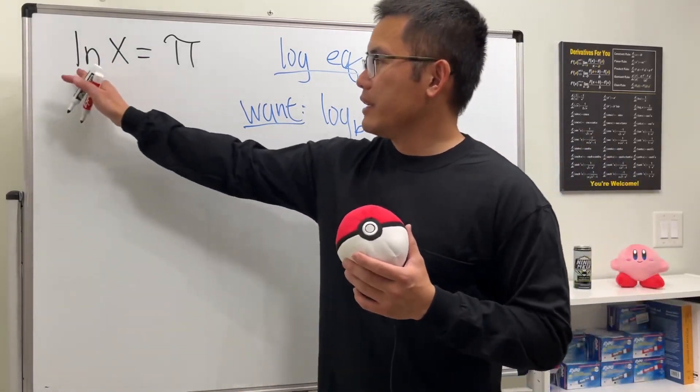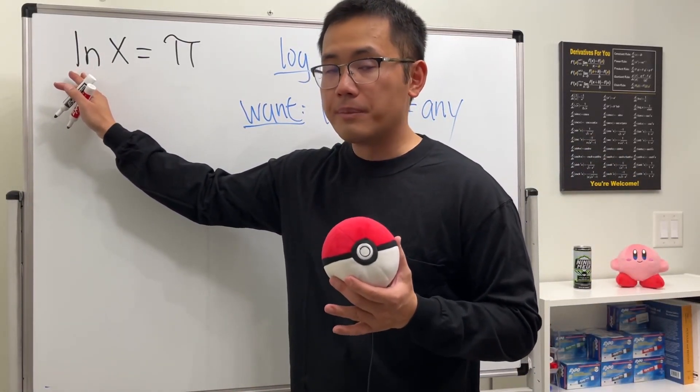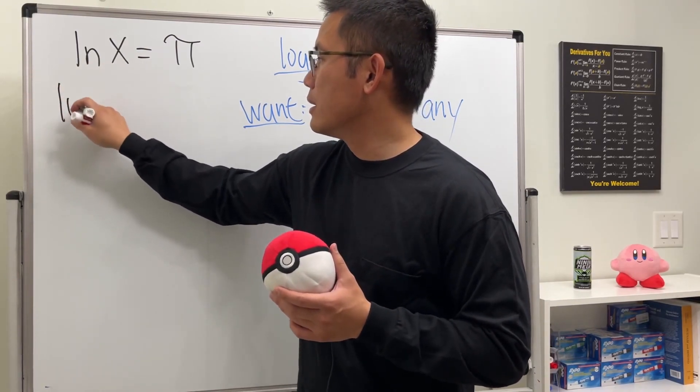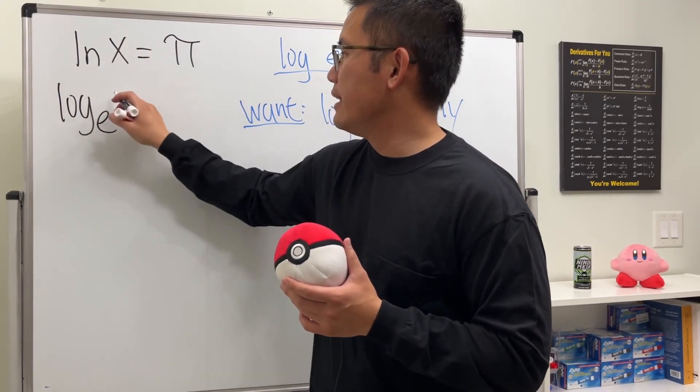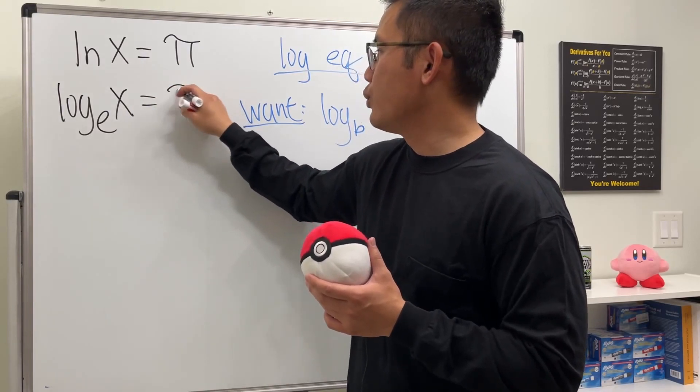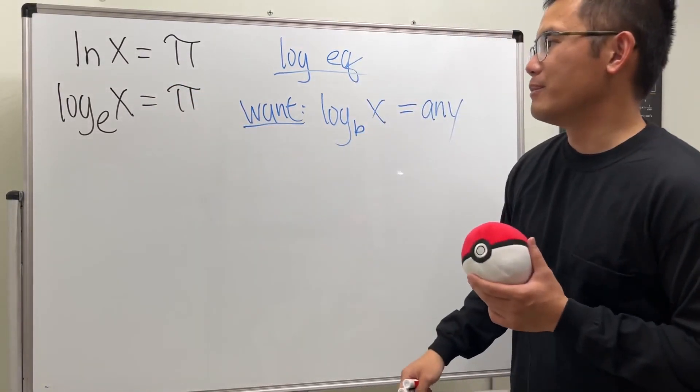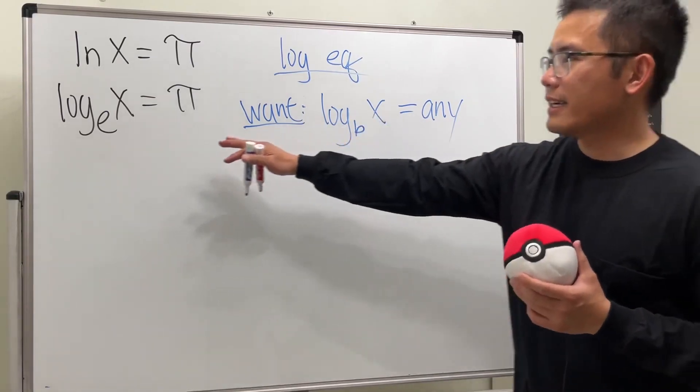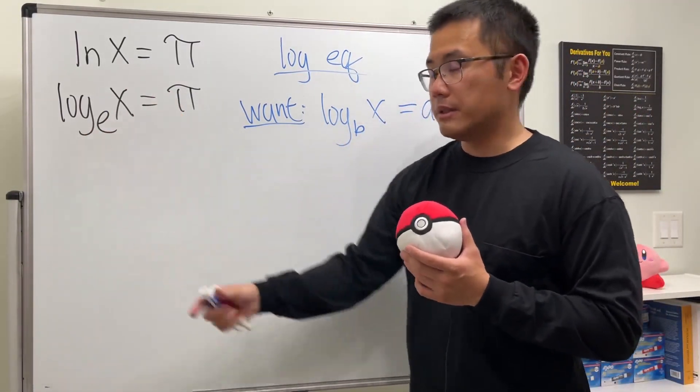All right. Here we have ln. This is natural logarithm, which means we have log base e. And then the input is x. And the right-hand side is equal to π, which again is just like a number. All right. So this is exactly what we have, the log parts by itself.